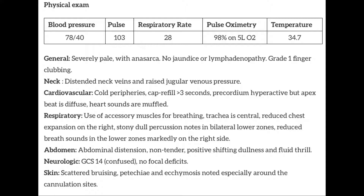Physical exam is notable for the following vital signs: the patient is hypotensive, with mild tachycardia and tachypnea. He is requiring oxygen at five liters via nasal cannula, and his temperature is notably a bit hypothermic. Generally, he is severely pale with anasarca, no jaundice or lymphadenopathy. He has distended neck veins and raised jugular venous pressure, cold peripheries, and cap refill greater than three seconds. Respiratory use of accessory muscles for breathing, trachea central, reduced chest expansion on the right side, and stony dull percussion noted in the bilateral lower zones, with reduced breath sounds in the lower zones, markedly on the right side.